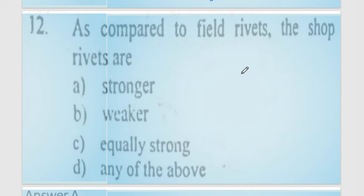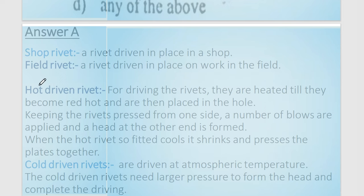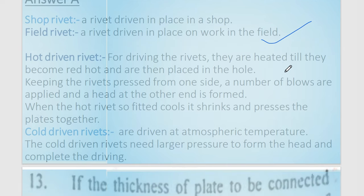Question 11: comparing shop rivets and field rivets. A shop rivet is driven in the workshop under controlled conditions, while a field rivet is driven at the construction site. Because of better quality control in the workshop, shop rivets are obviously stronger than field rivets. Option number corresponds to shop rivets being stronger.